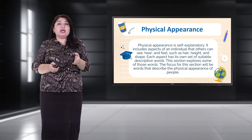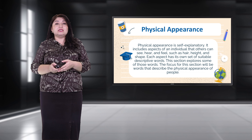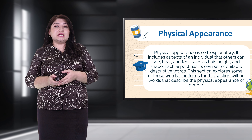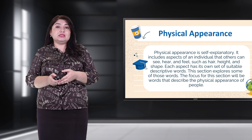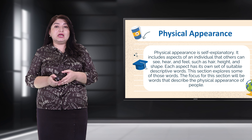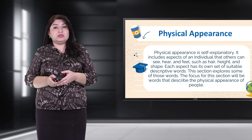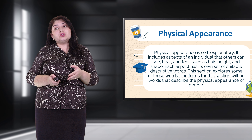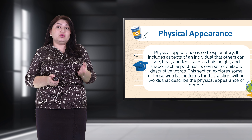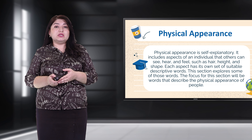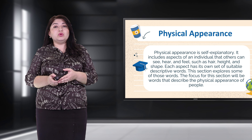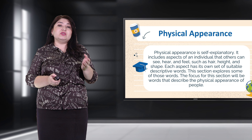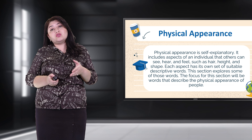Physical appearance is self-explanatory. It includes aspects of an individual that others can see, hear, and feel — such as hair, height, and shape. Each aspect has its own set of suitable descriptive words. The focus for this section will be words that describe the physical appearance of people.